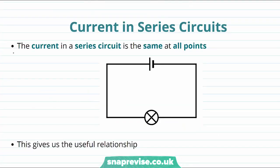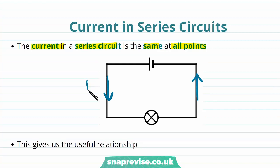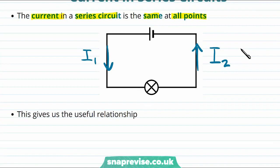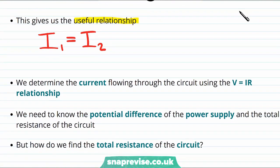Let's talk about current in series circuits. The current in a series circuit is the same at all points in the circuit. If we label the currents I1 and I2, then because the current is the same at all points, we can write the useful relationship that I1 equals I2. We have this useful fact about current, but how can we actually determine the current flowing through the circuit?